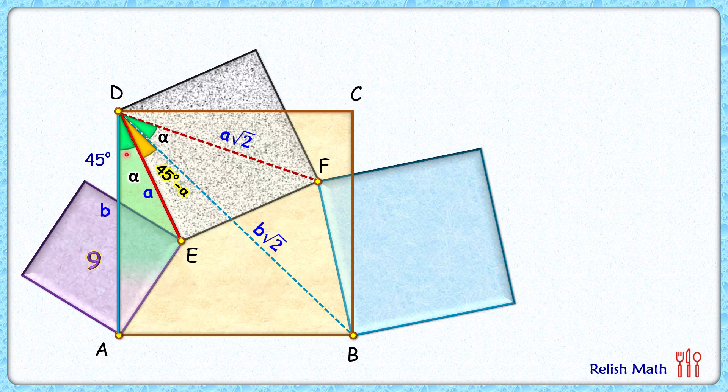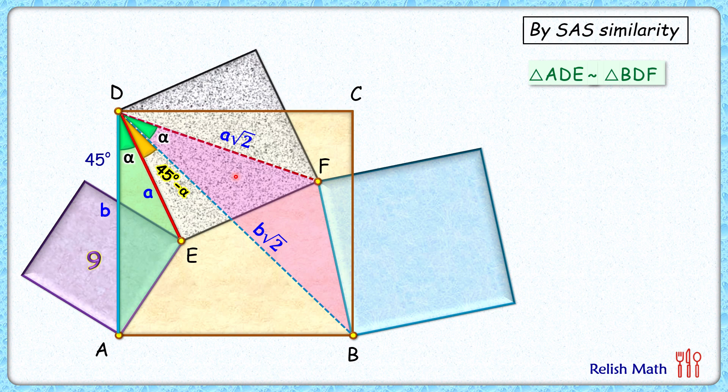Consider the green triangle where the ratio between the side lengths is a/b and the angle between them is α degrees. In the pink triangle, the ratio of side lengths is also a to b, and the angle between them is α degrees. By Side-Angle-Side similarity, if the ratio between the sides is equal and the angle between them is equal, then the triangles are similar. Therefore, the green triangle is similar to the pink triangle.